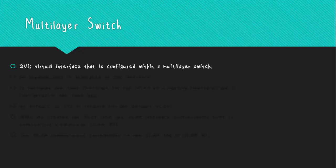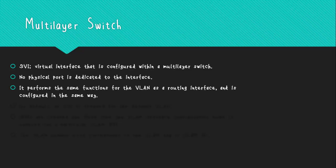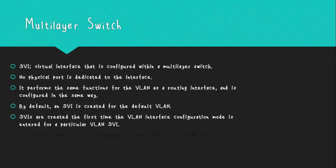An SVI is a virtual interface connected within a multilayer switch. There is no physical port dedicated to the interface, and it performs the same function for the VLAN as a router interface and is configured in the same way. By default, an SVI is created for the default VLAN, which is VLAN 1. This SVI permits remote switch administration. Any additional SVI must be explicitly created.